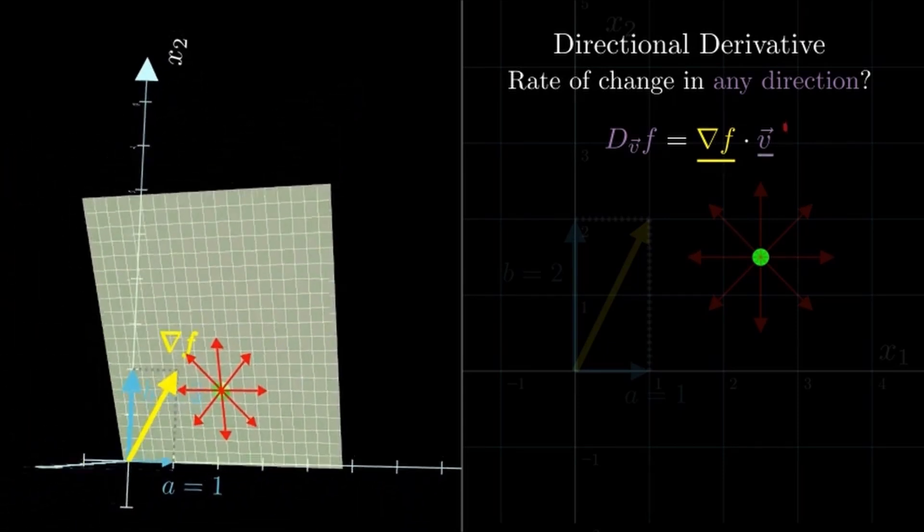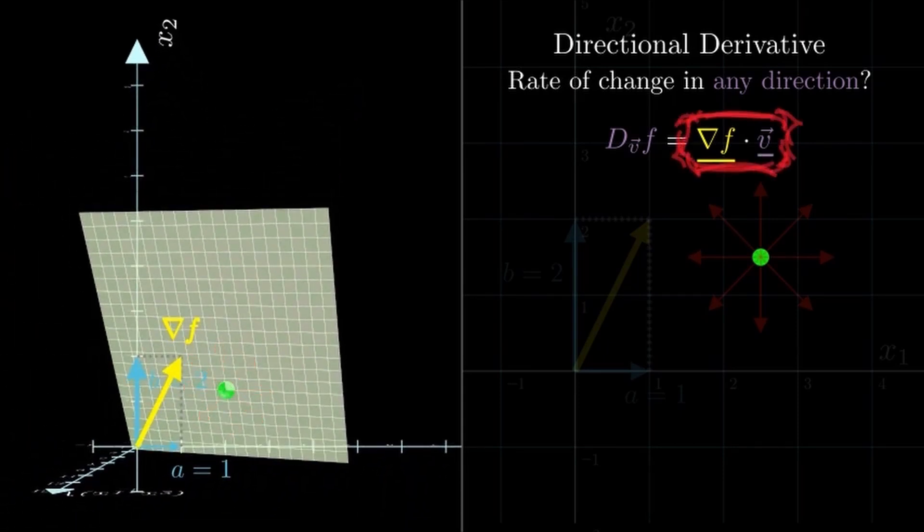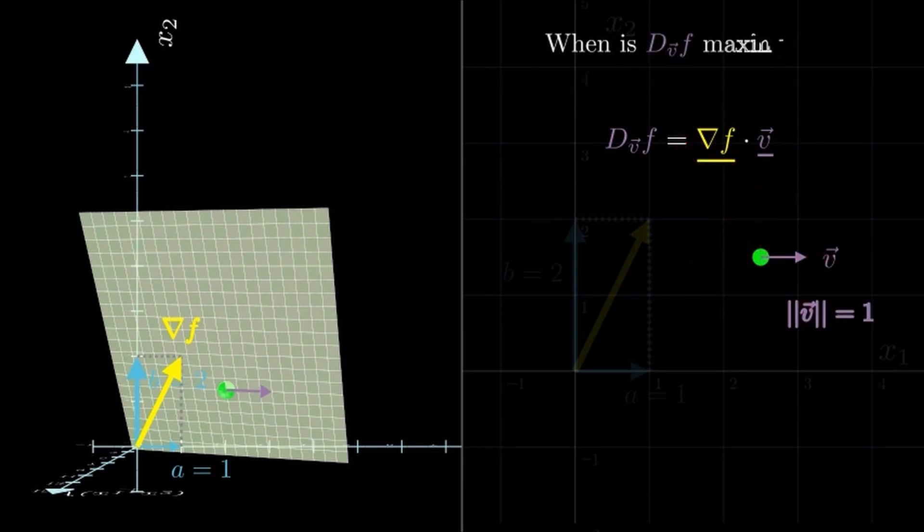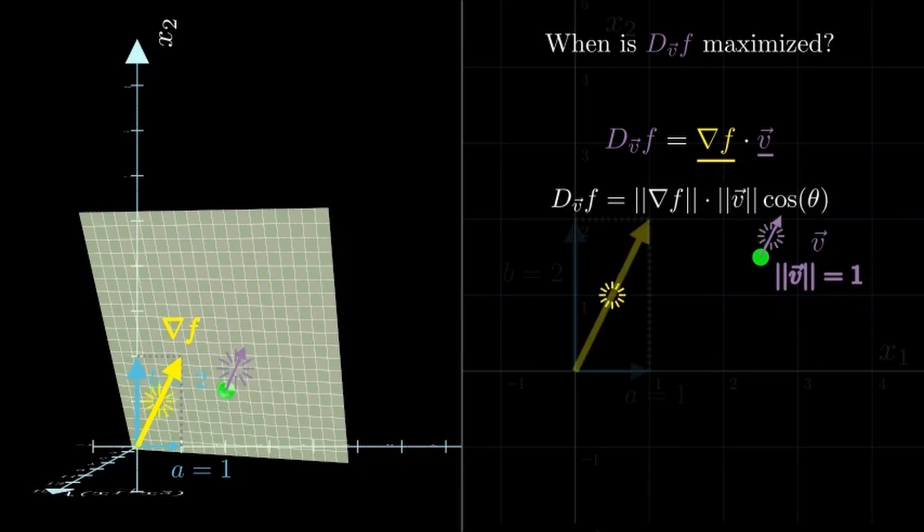Now, among all possible directions, in which direction does the directional derivative reach its maximum? In other words, which direction makes f increase the fastest? Of course, the gradient itself. That's what the gradient has been telling us all along: the steepest direction.